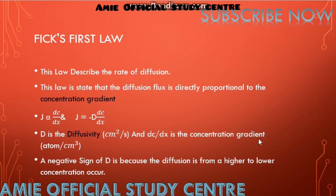The concentration gradient unit is atoms per centimeter cubed. The negative sign is because diffusion occurs from higher concentration to lower concentration — that is, from a region of higher concentration to a region of lower concentration.